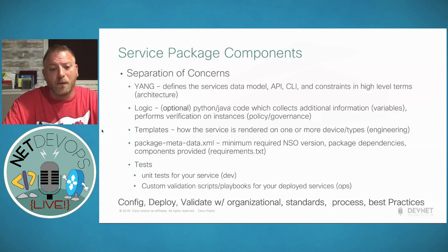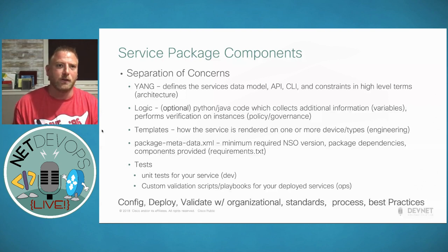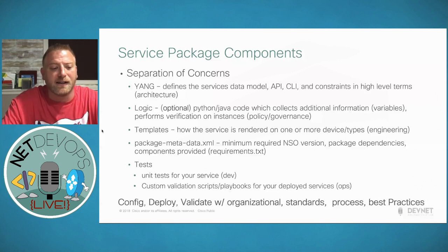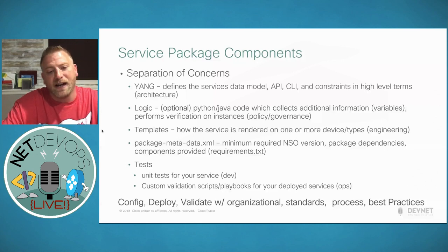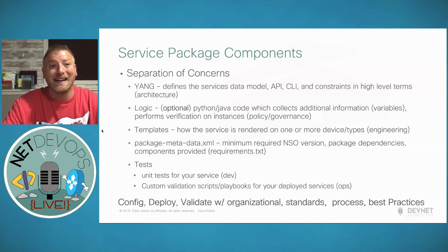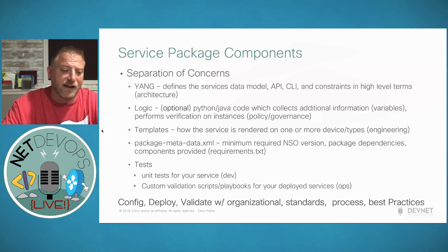The second layer is an optional logic layer — Python, Java, or even Erlang code. We ask the user for a set of parameters to provision the service, but we may not want to expose all nitty-gritty details because some information may need to come from external systems we're integrating with. We can write simple Python code that makes calls into external systems, gathers information, or computes naming standards. Then we have a template layer — the network engineering mapping of the abstract service down onto one or more vendor-specific device types using XML templates.